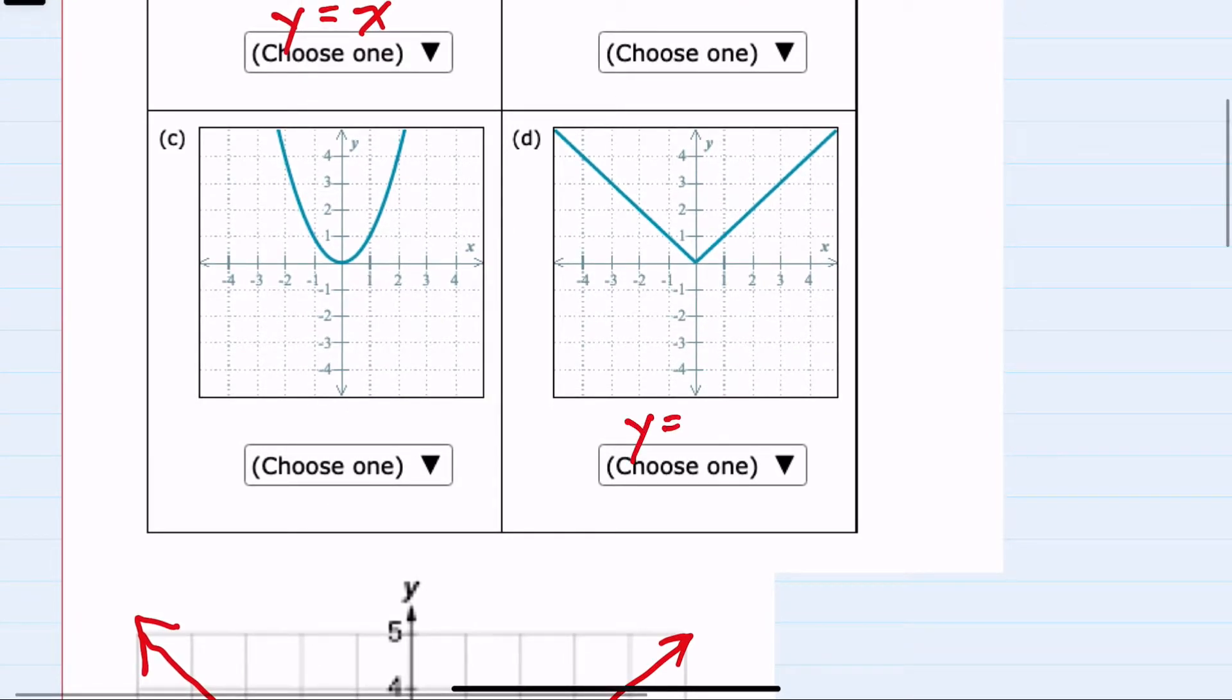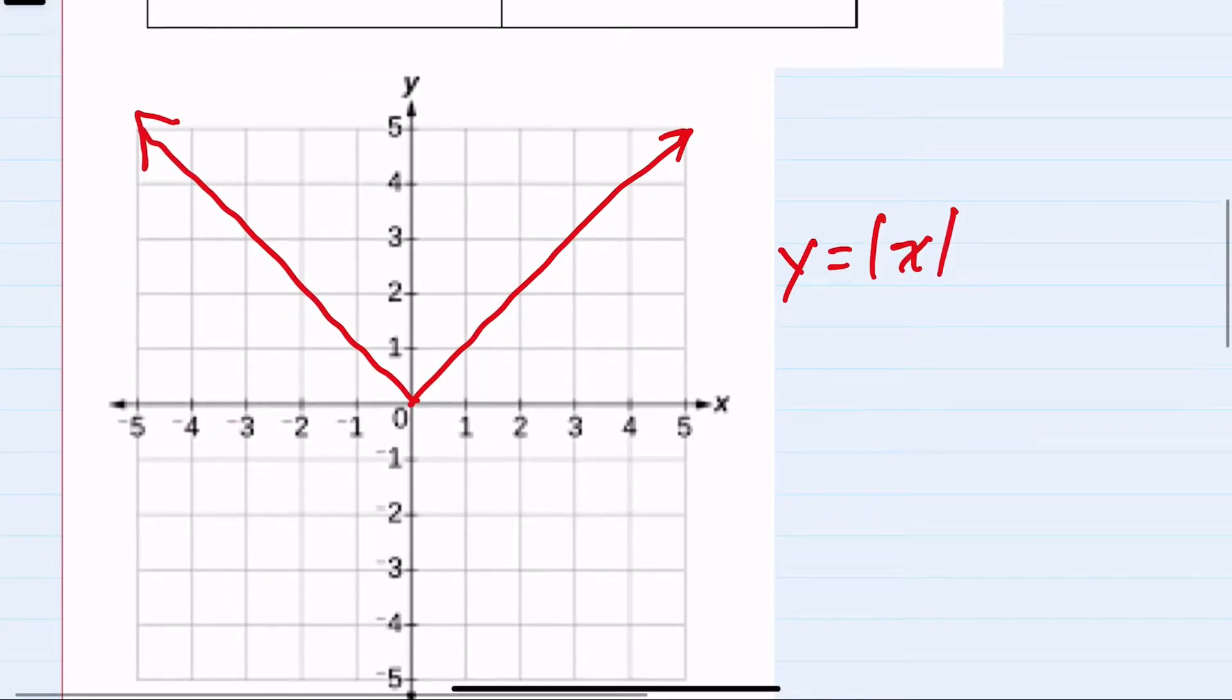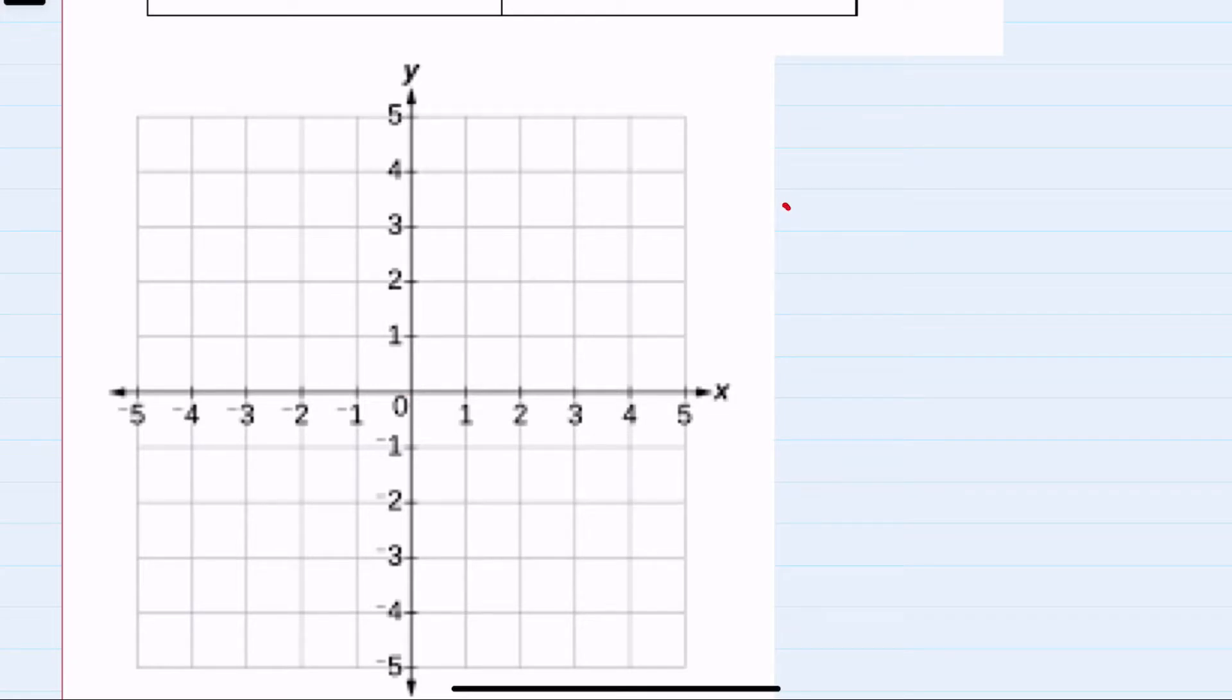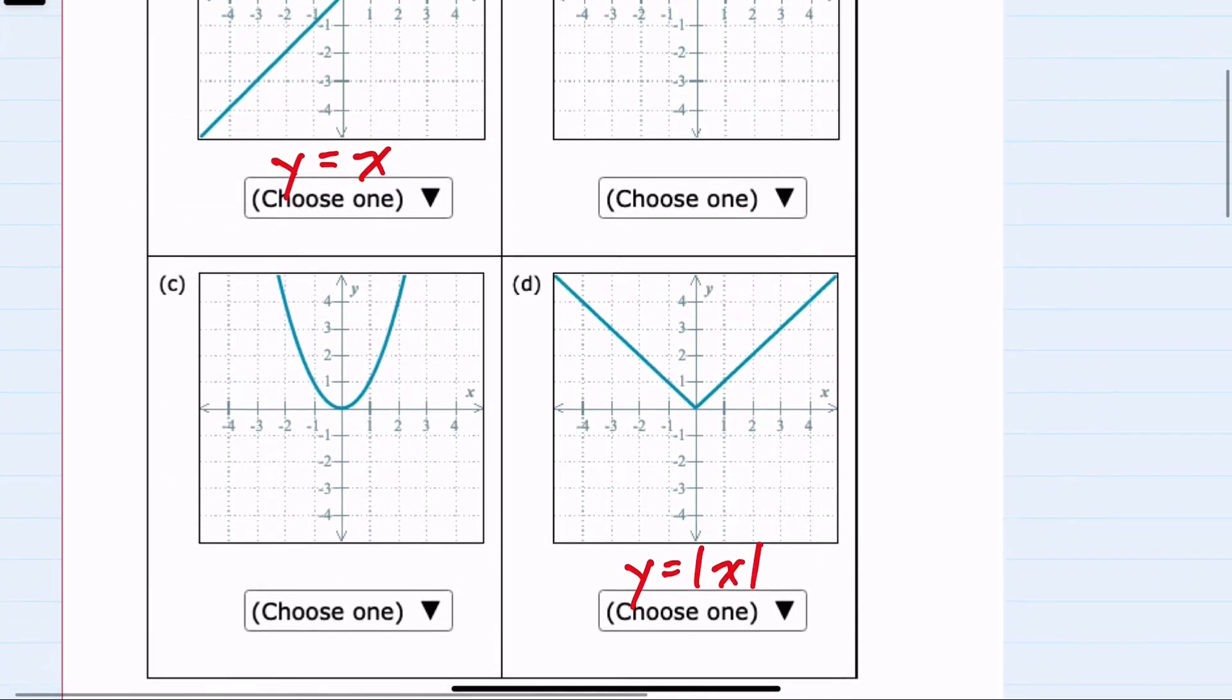This is y equals absolute value of x. If we keep going, another parent function is y equals the square root of x, which has a distinctive starting point at 0 and sort of arcs upwards like so. Looking at our two remaining functions, neither of those have that shape, so we'll continue to other parent functions.